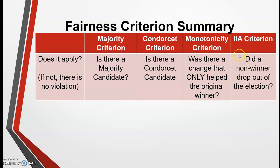The IIA only applies when you have some type of an election — a re-election, a second election, a recount, a straw vote versus an election, anything like that. But in that case, you have to have a non-winner dropping out in order for the criterion to apply. So the first question to ask yourself is: do these apply?